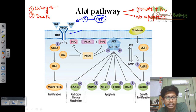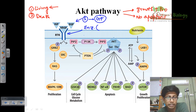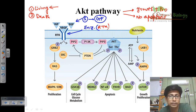The receptors for the AKT pathway are enzymatic receptors with enzymatic functionality. One example is the receptor tyrosine kinase type of receptor. They function just like the tyrosine kinase family receptors. The process starts when receptor tyrosine kinases are embedded in the membrane and a growth factor binds with that receptor — the ligand of the growth factor binds with the receptor tyrosine kinase.